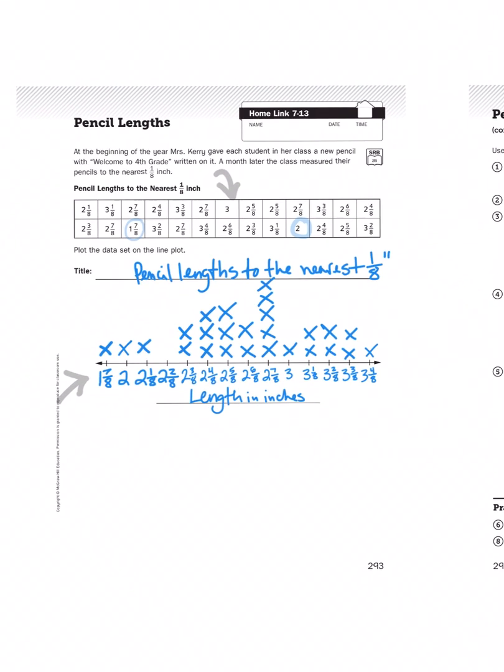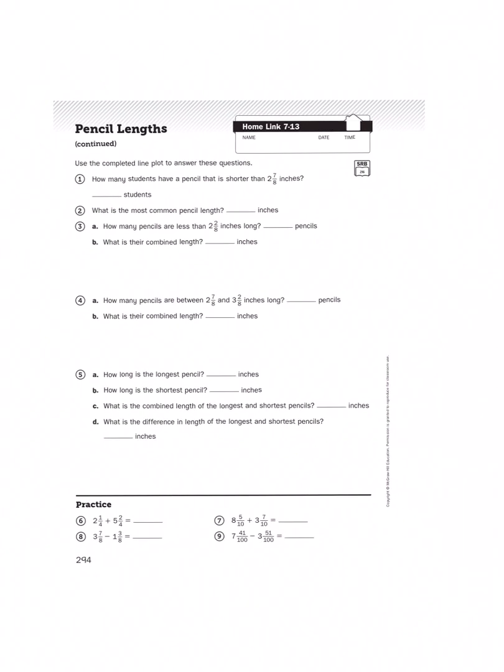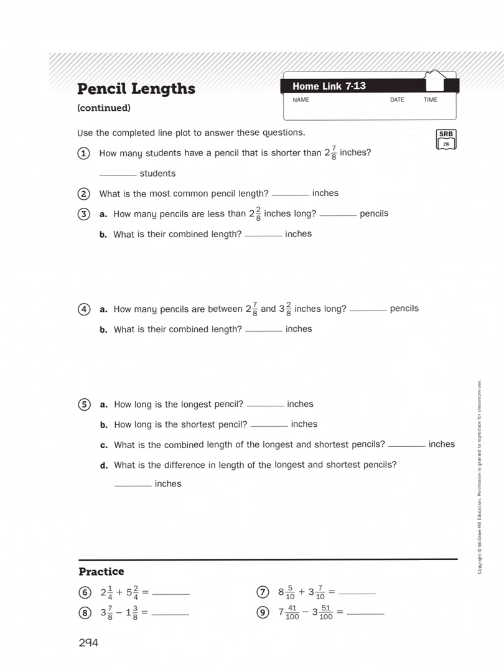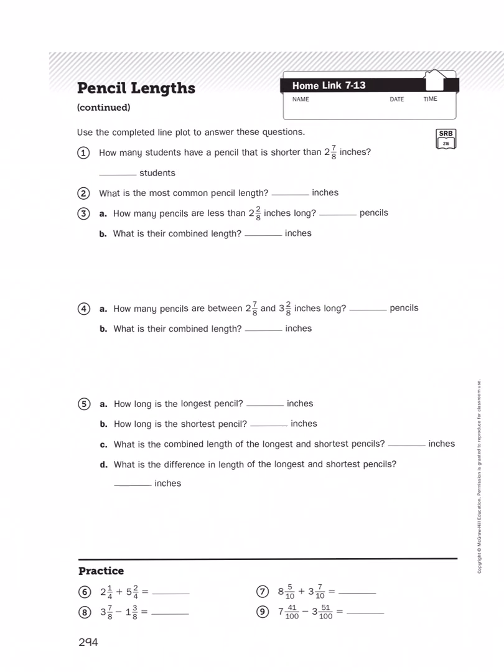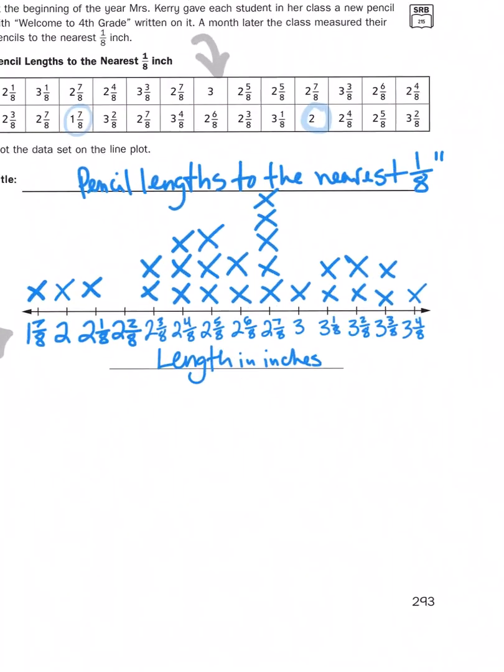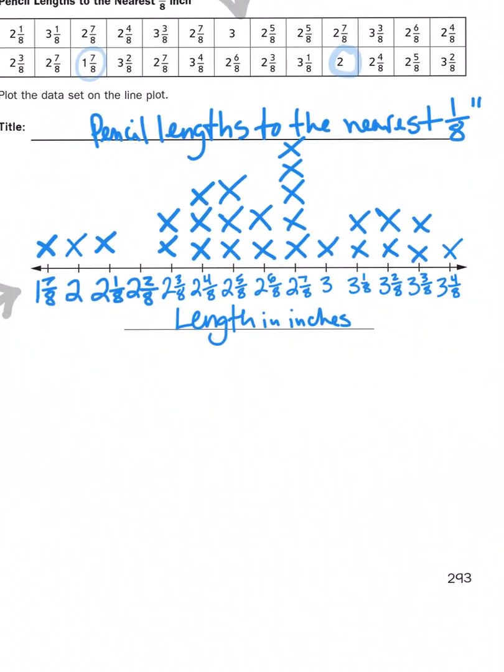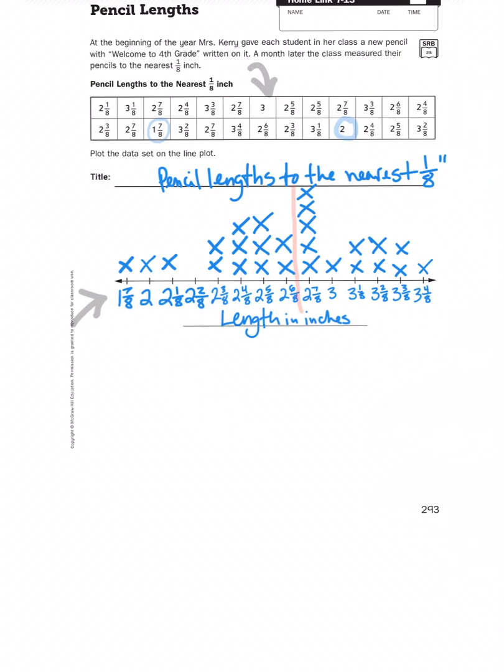So now that we have all the data we need, or the data has been sorted in a way that we can easily access, we now need to look at the questions on the following page. It says, use the completed line plot to answer these questions. For example, number one says, how many students have a pencil that is shorter than 2 7/8 inches? 2 7/8 inches. So that would mean anywhere on this number line to the left of this area here, I would count all those x's and add them all up. So let's count them.